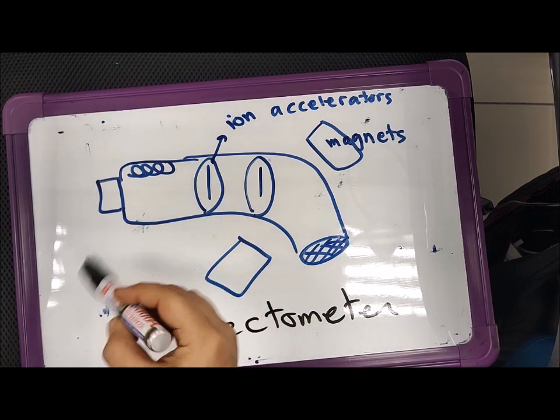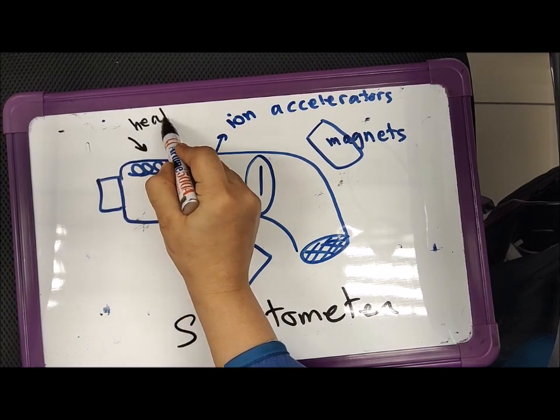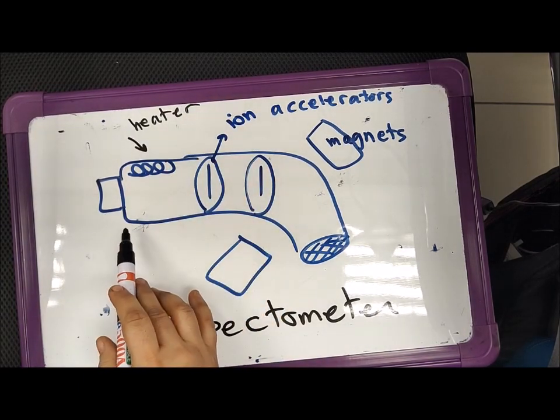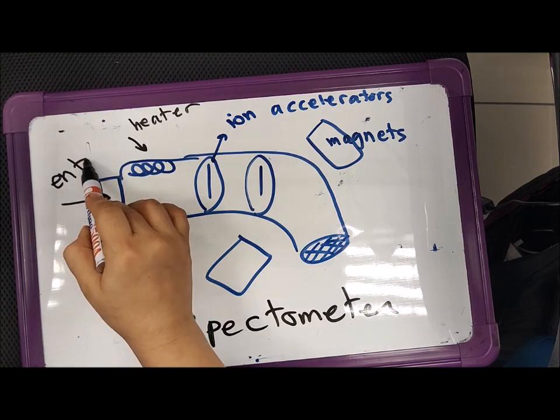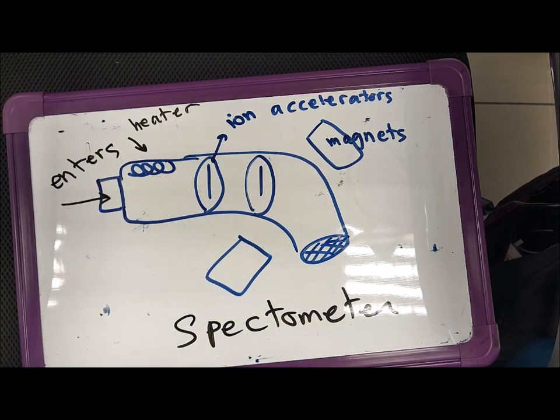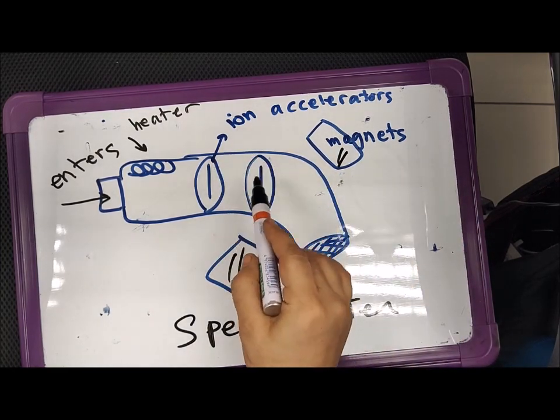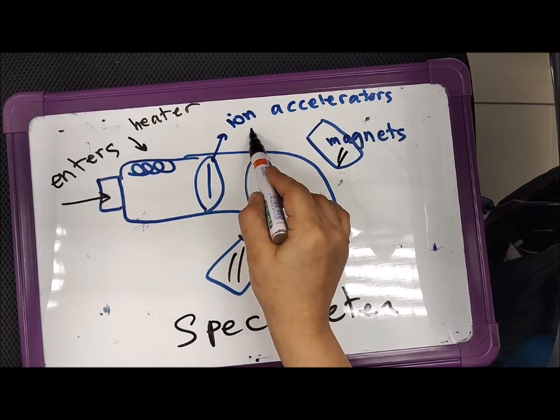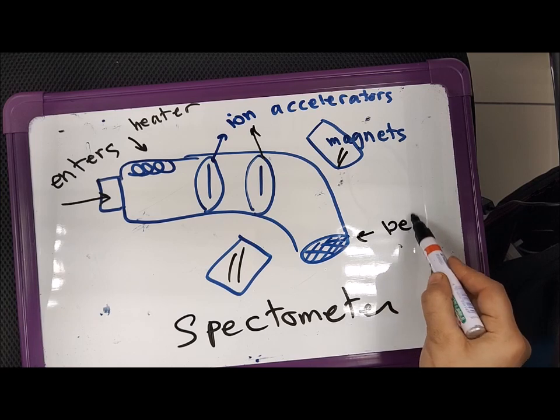It has one heater here, this is an element or the heater, and this is where the sample enters into the system, into the machine, into the gun. Then there are two magnets on both sides, and here we have two ion accelerators, and there is one detector also here.